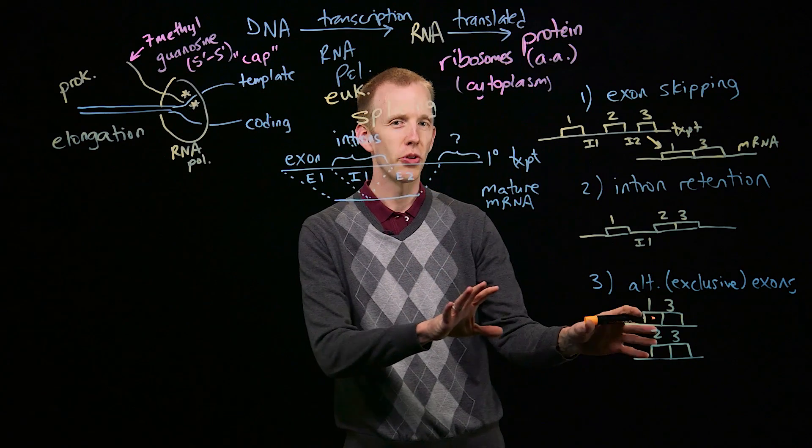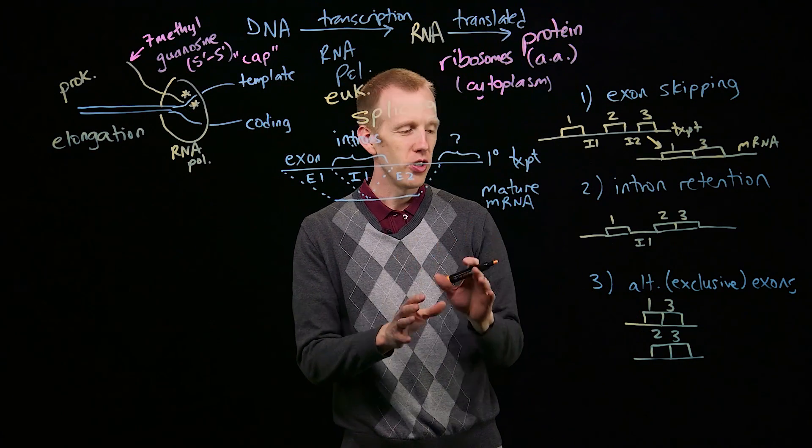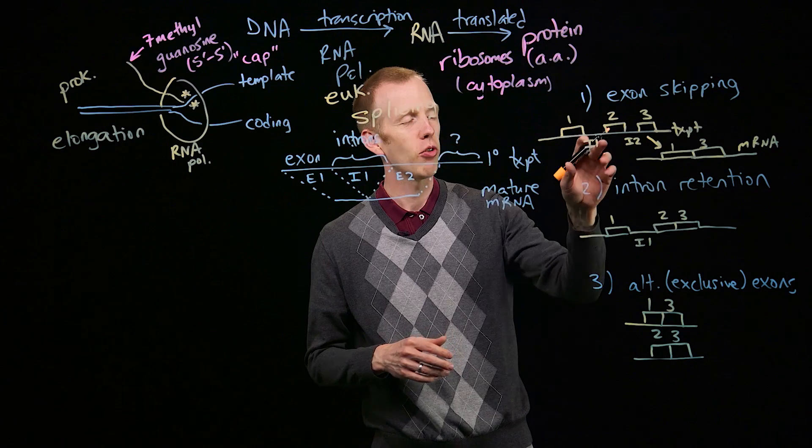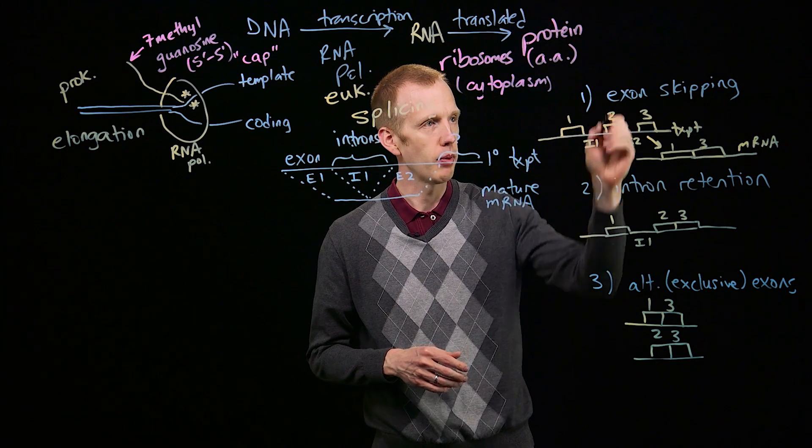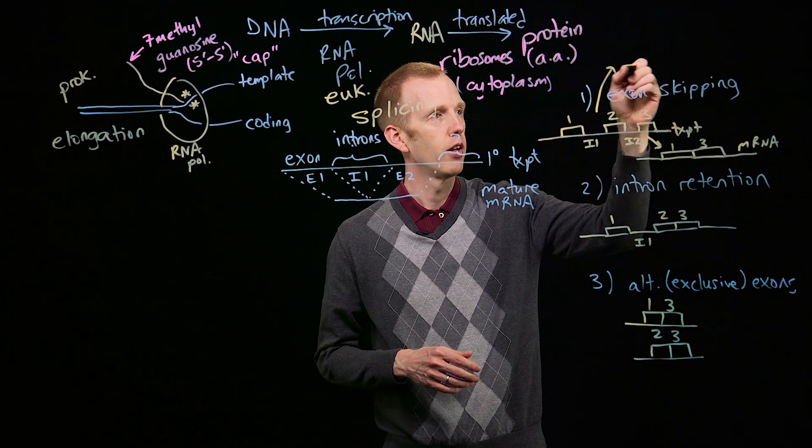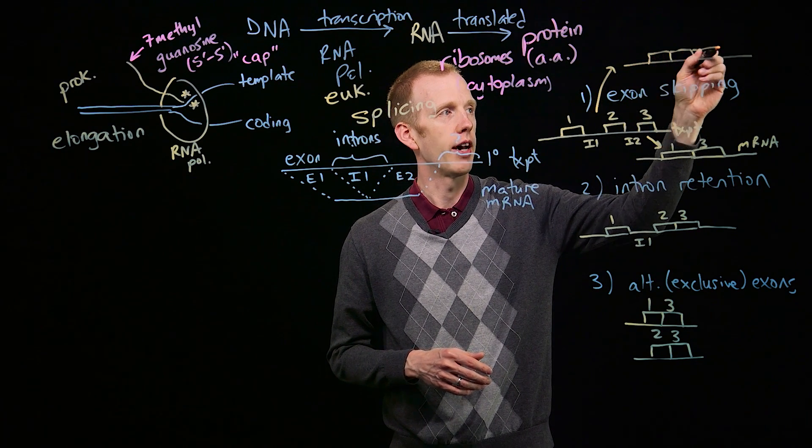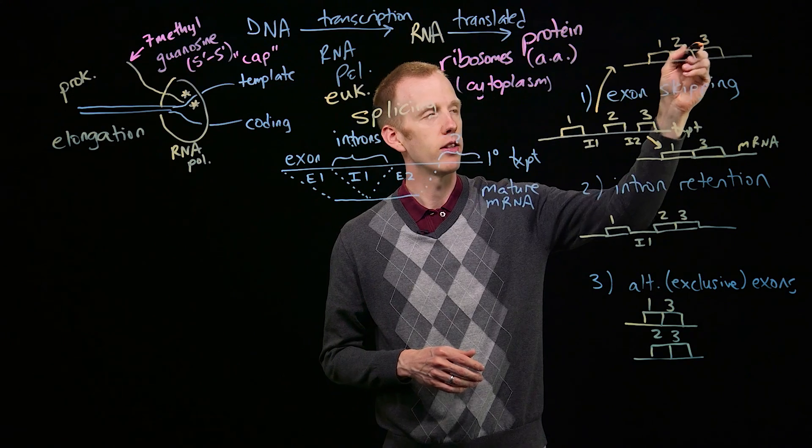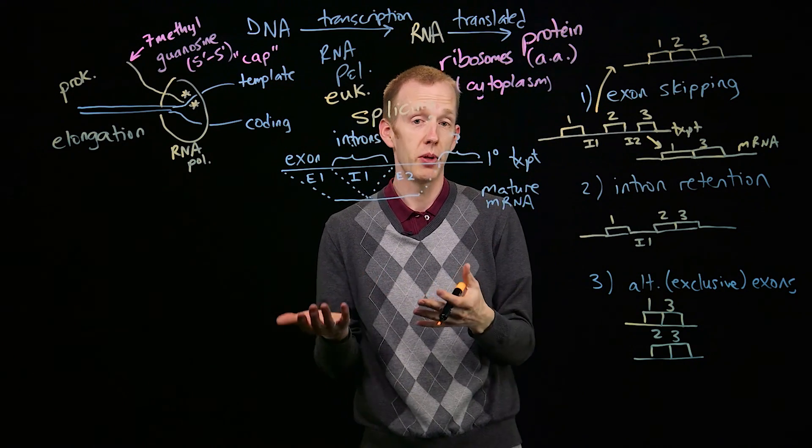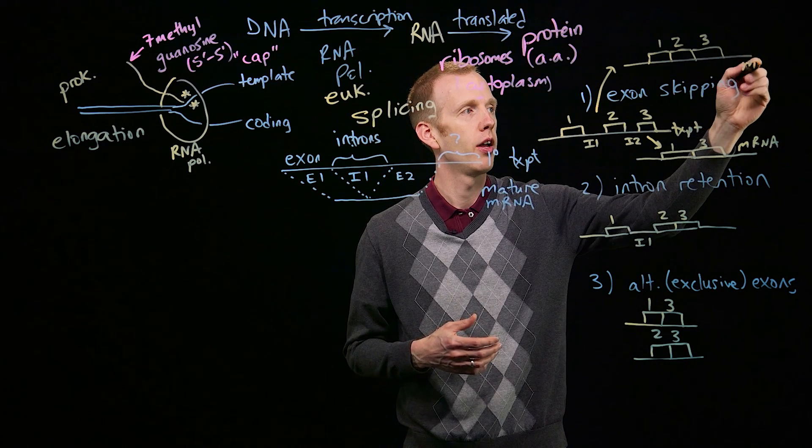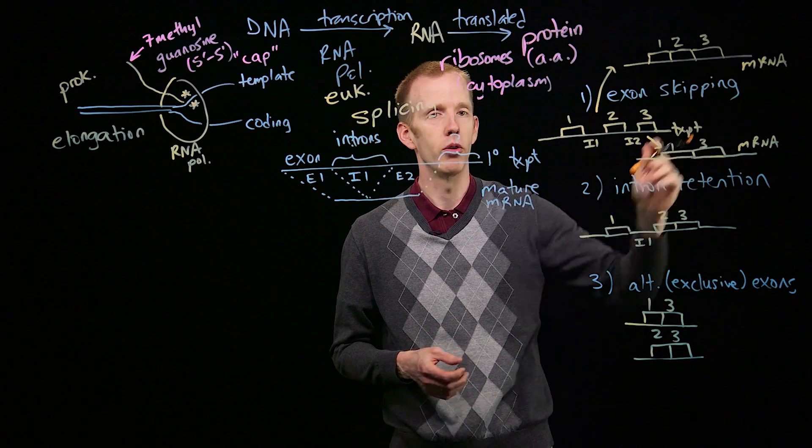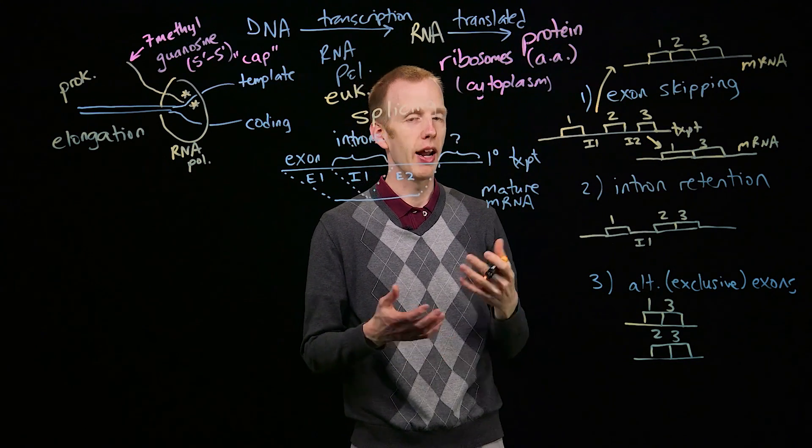When I was drawing alternative splicing, I should have mentioned explicitly that, of course, it's possible that exons 1, 2, and 3 get spliced together with all of the introns removed. And that might be the sort of splice pattern you'd expect. If there are 3 exons, they would all be put into the messenger RNA molecule and all of the introns be removed. And that's often the case.